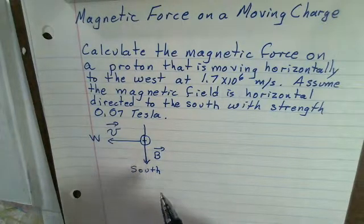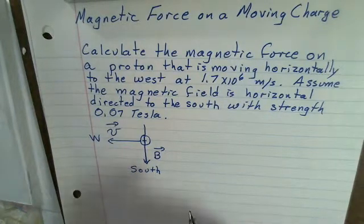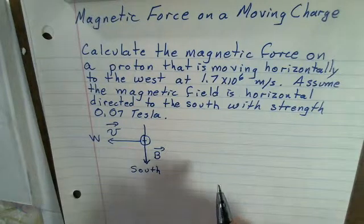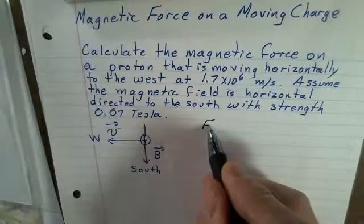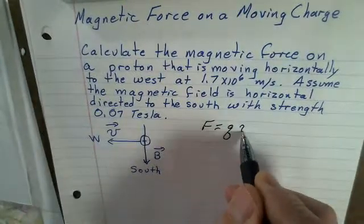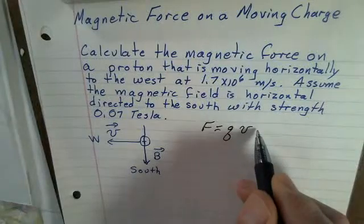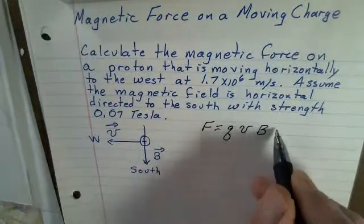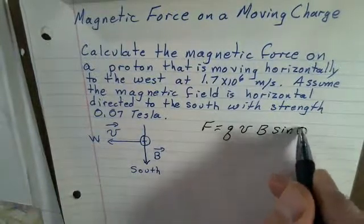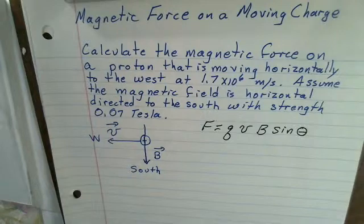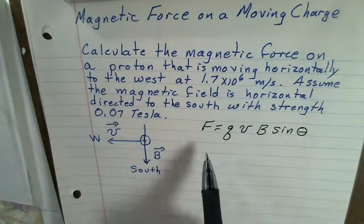There's two parts to calculating this answer. One part is the strength of the force. For the size of the force we use F equals Q, the charge, times the velocity, actually just the speed number, times the strength of the magnetic field, and times the sine of the angle in between the velocity vector and the magnetic field vector. So this will give us the strength of the magnetic force.